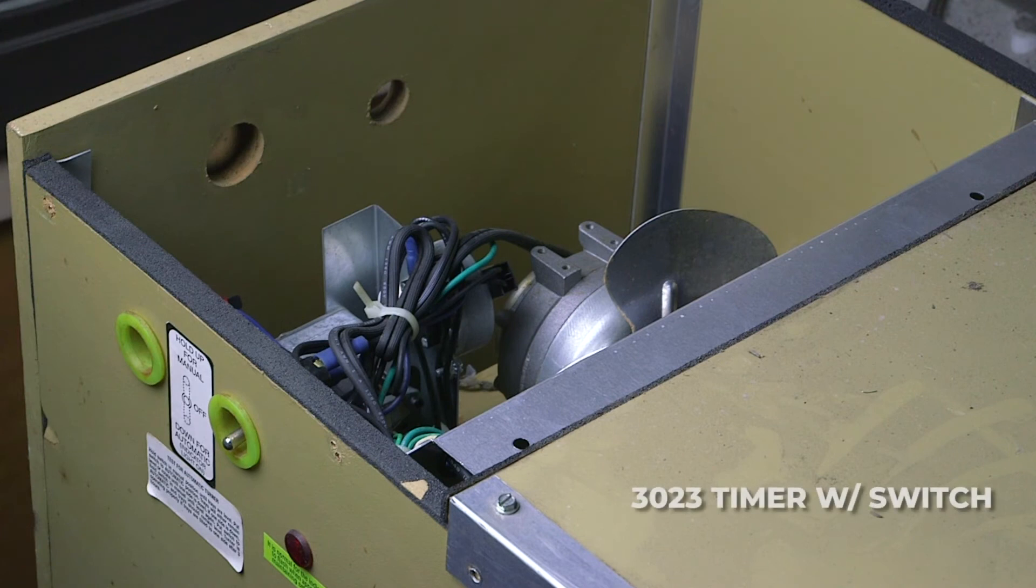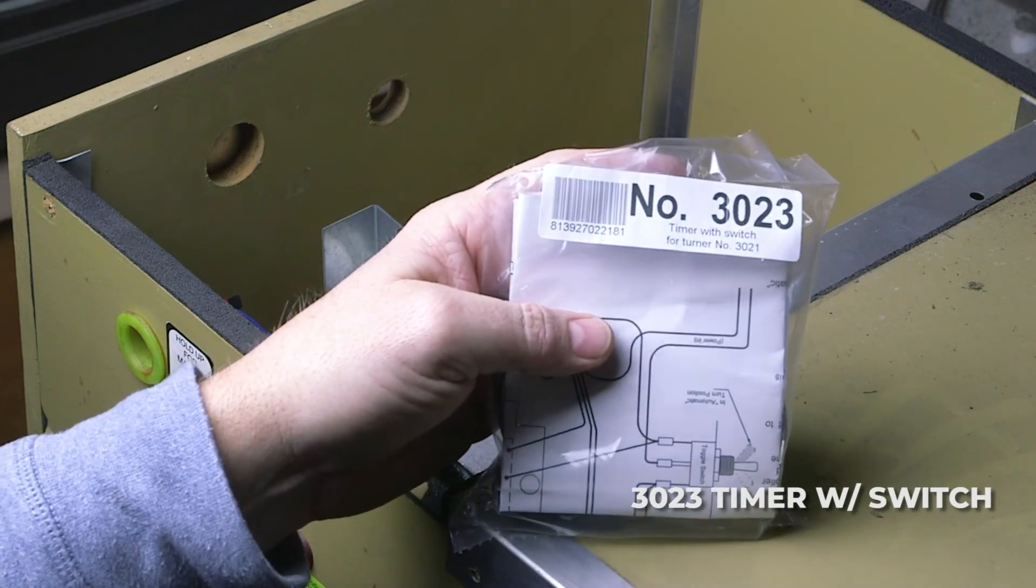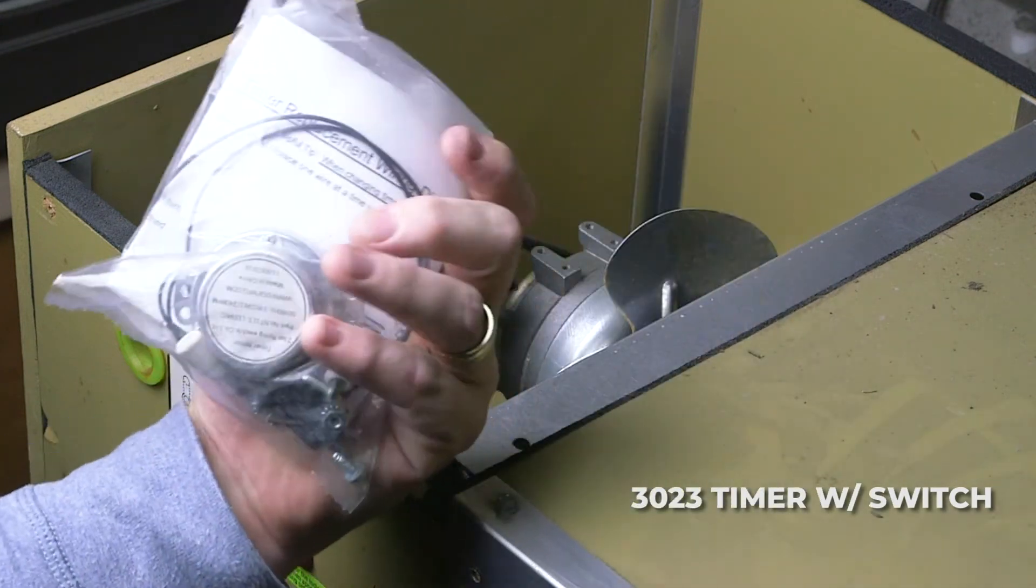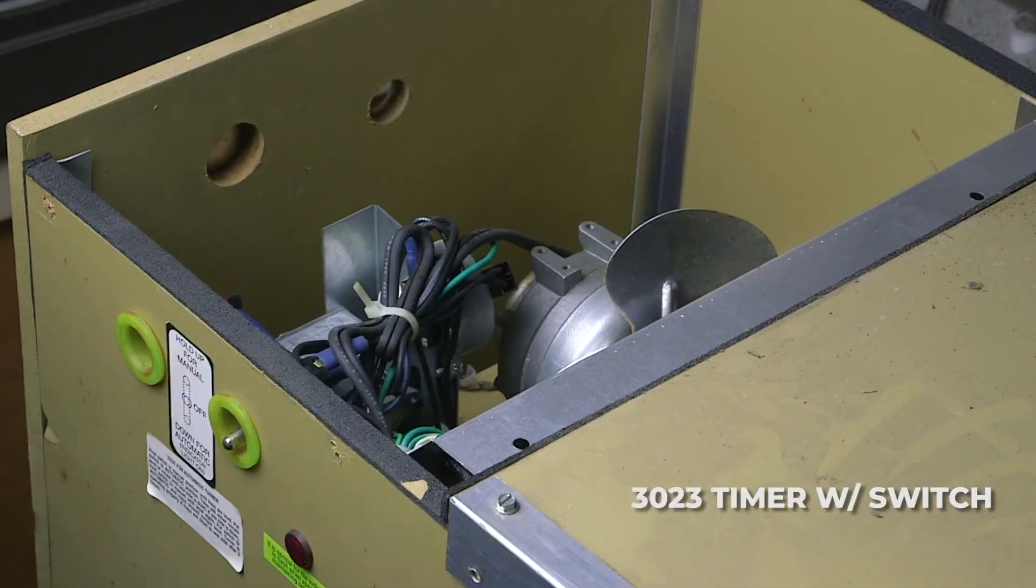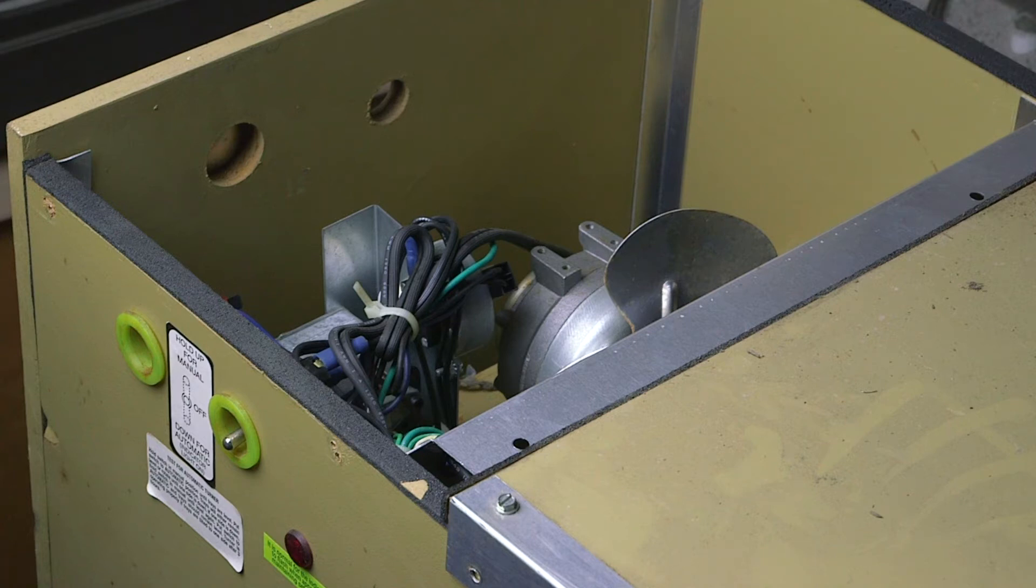Now that timer can be replaced. Part number 3023, it's a timer with a roller switch. It comes with the two wires you need, pretty simple change out. It comes with the instructions to show you how to do so.